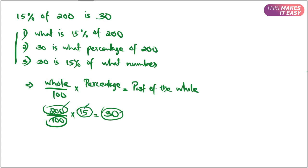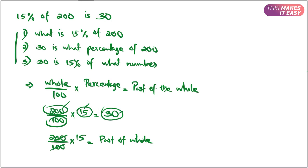The single method is to use cross multiplication. Let's start with the first question: what is 15% of 200? The world is 200, divided by 100 — it is constant — and the percentage is 15. The part of the world is what is being asked. Now let's solve: 200 divided by 100 is 2, and 2 into 15 is 30. So 30 is the answer — that is 15% of 200.